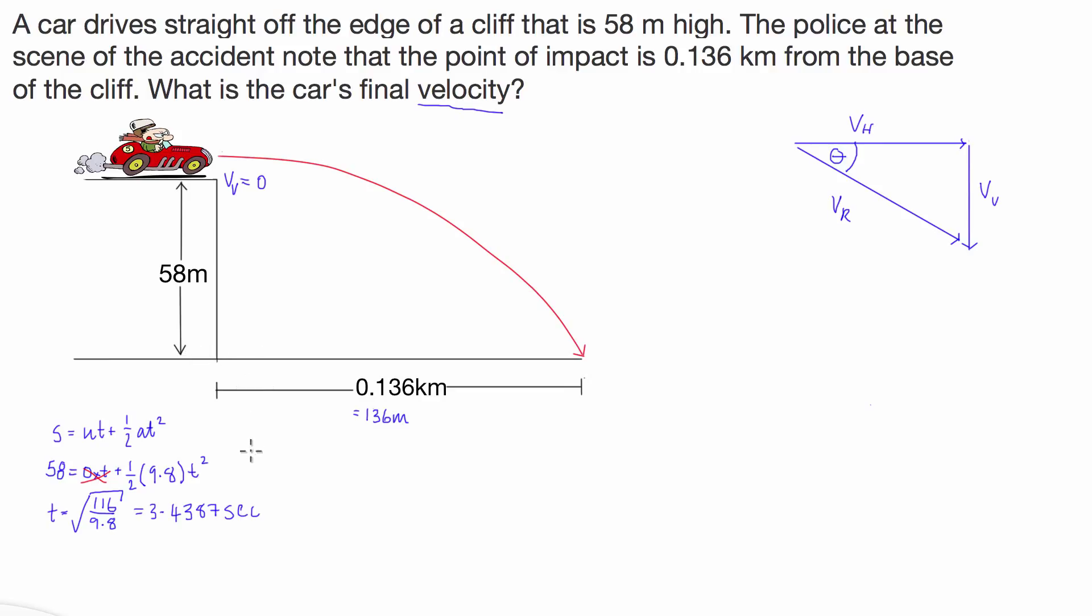Great, so that's how long the car is in the air for. What we can do now is we can calculate his horizontal velocity because with parabolic motion, when we assume no air resistance, velocity in the horizontal direction is always fixed. We know that he covers horizontally 136 meters in 3.4387 seconds, so we can calculate the horizontal velocity by simply dividing distance by time.